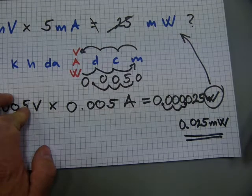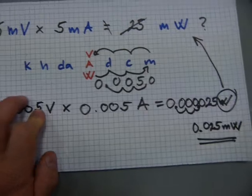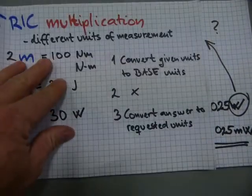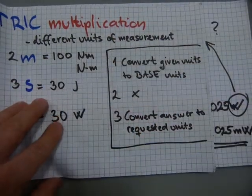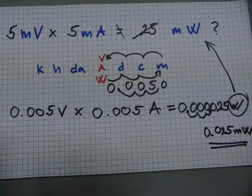The answer is 0.025 milliwatts. 25 thousandth milliwatts. Not 25 milliwatts. You need to practice it. You need to follow this procedure. Follow it every time. And you will get a correct result every time.